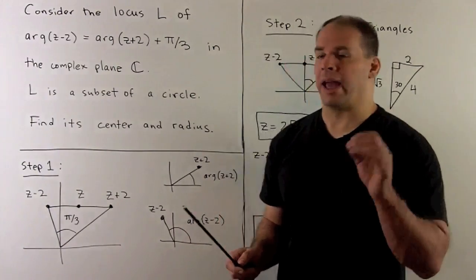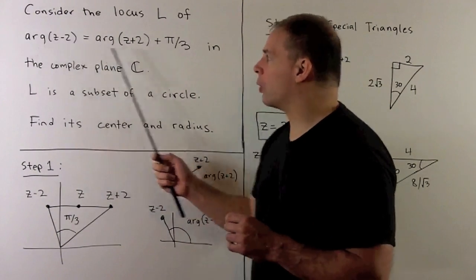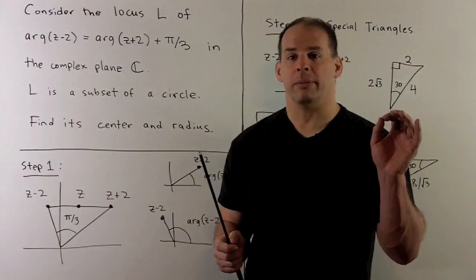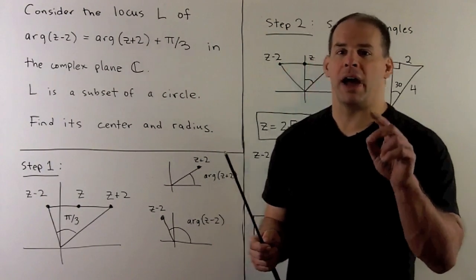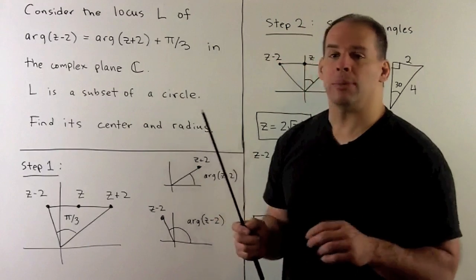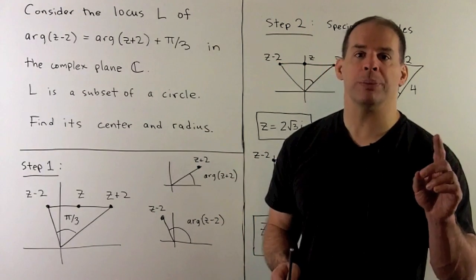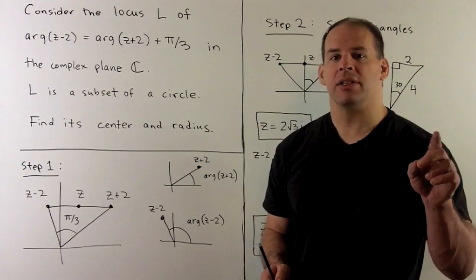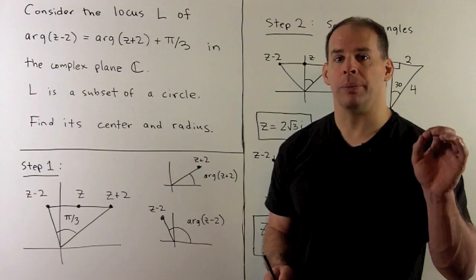At a glance, this equation doesn't look like something very familiar. So I'm not going to try to find clever relations between either side. I'm just going to try to brute-force out the picture. Then once I do that, we'll have access to special triangles to get to our circle.